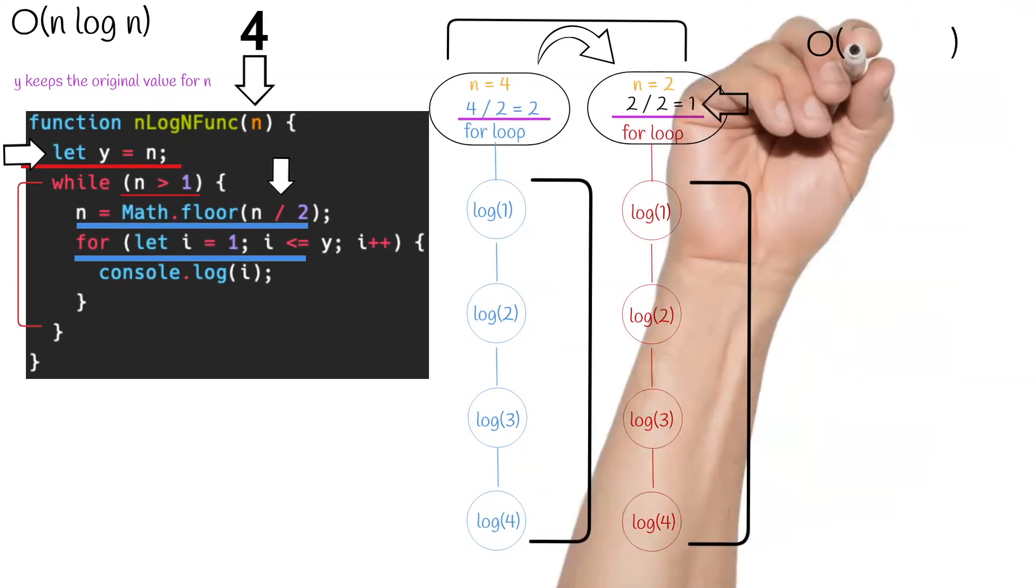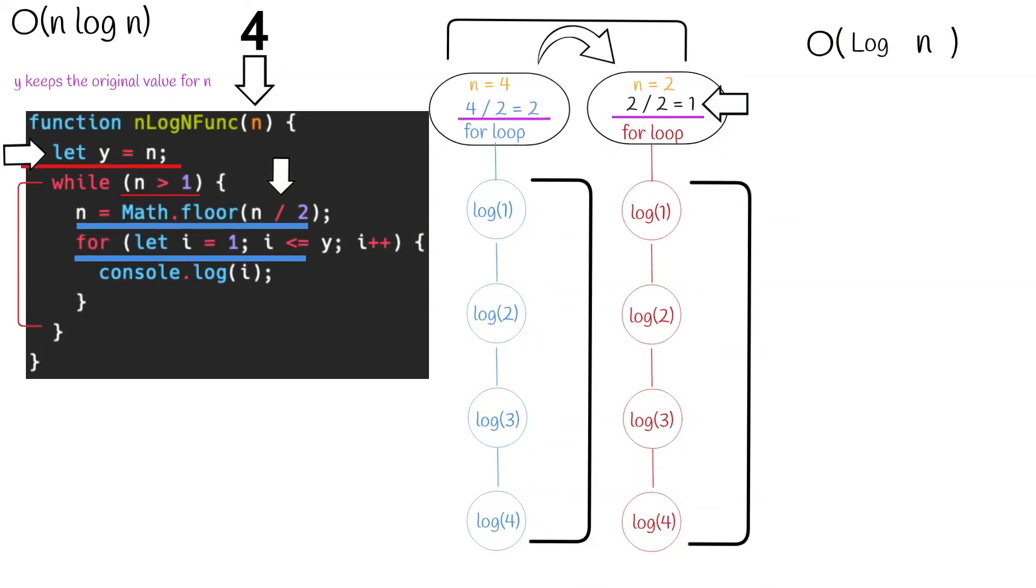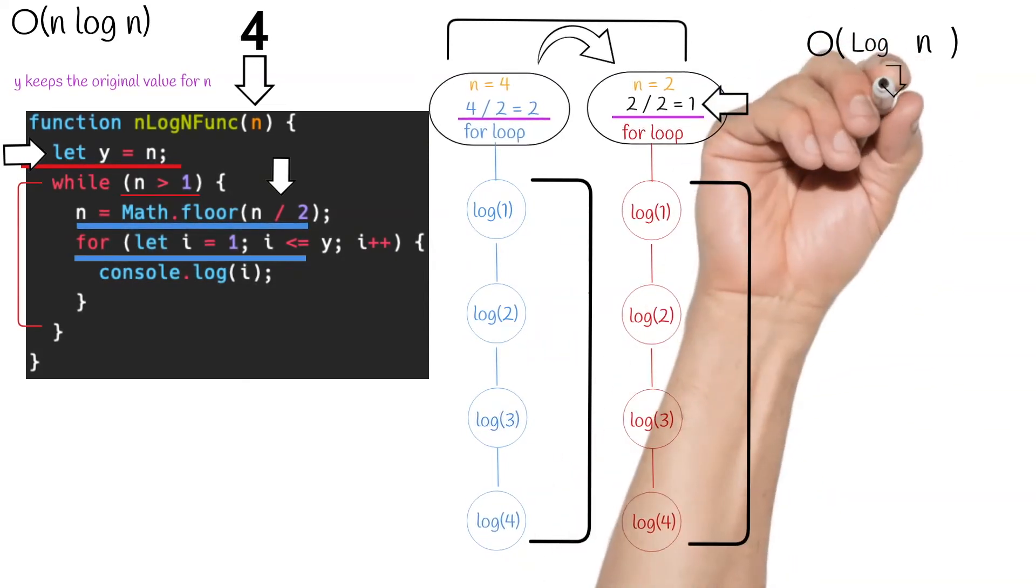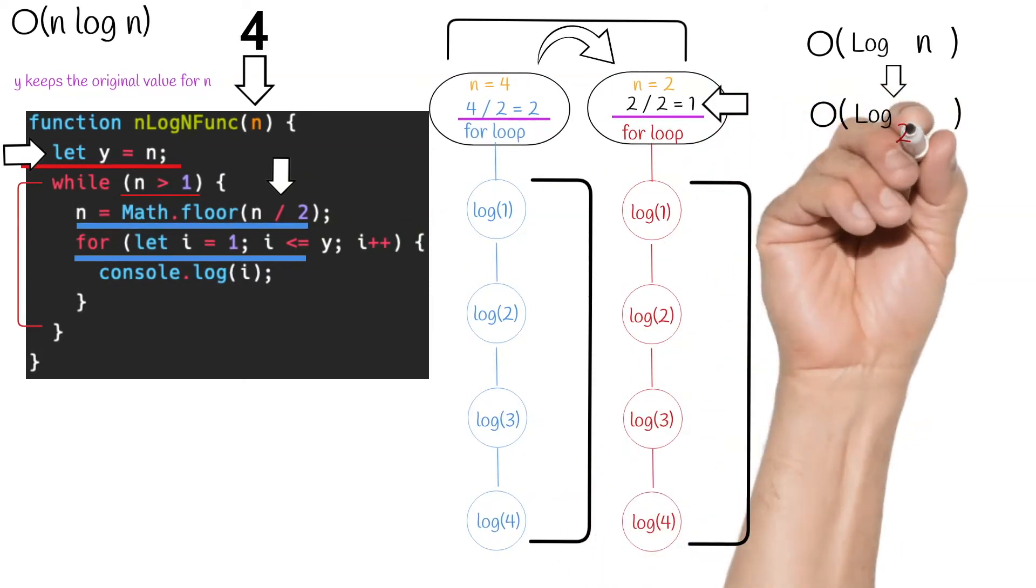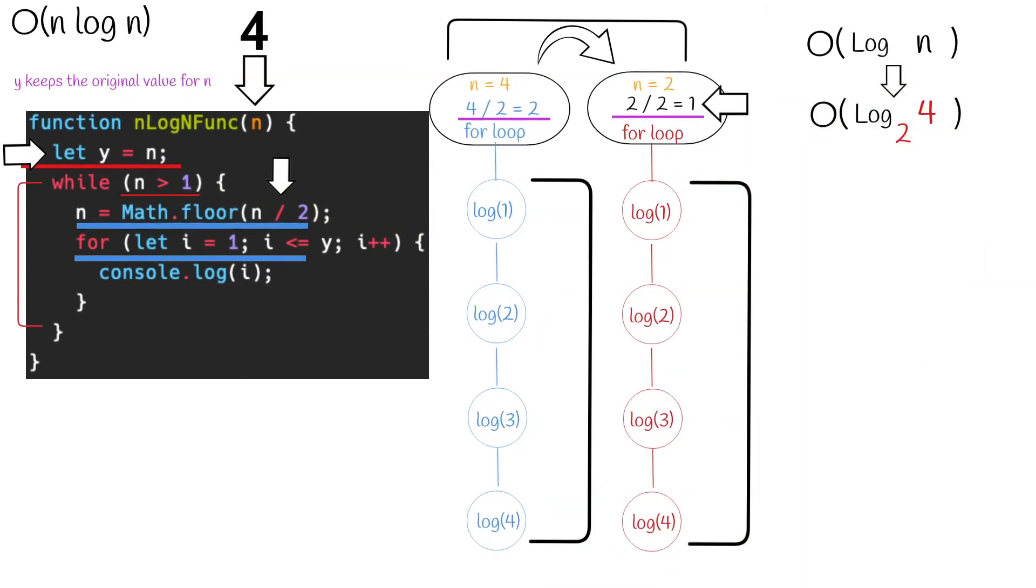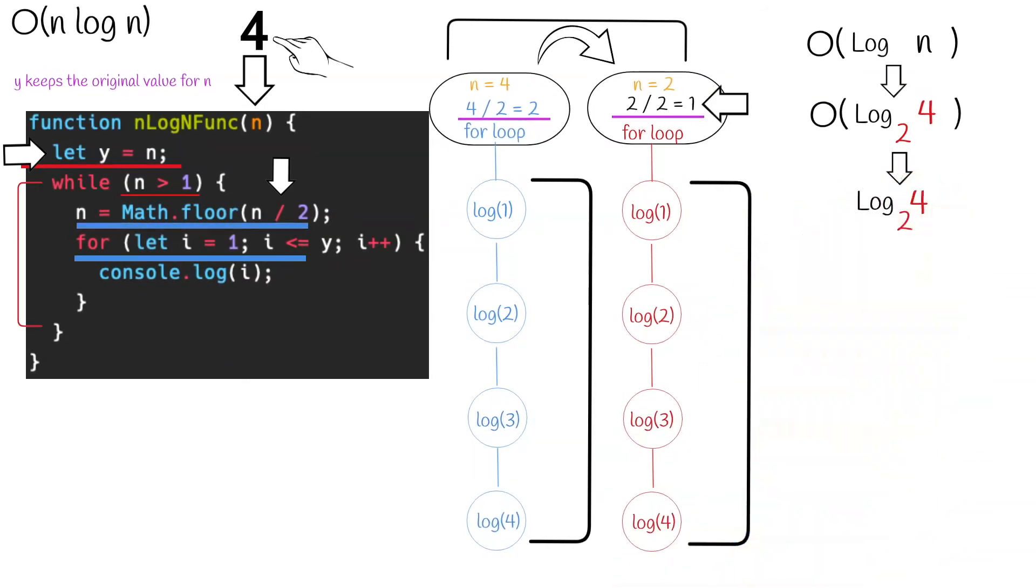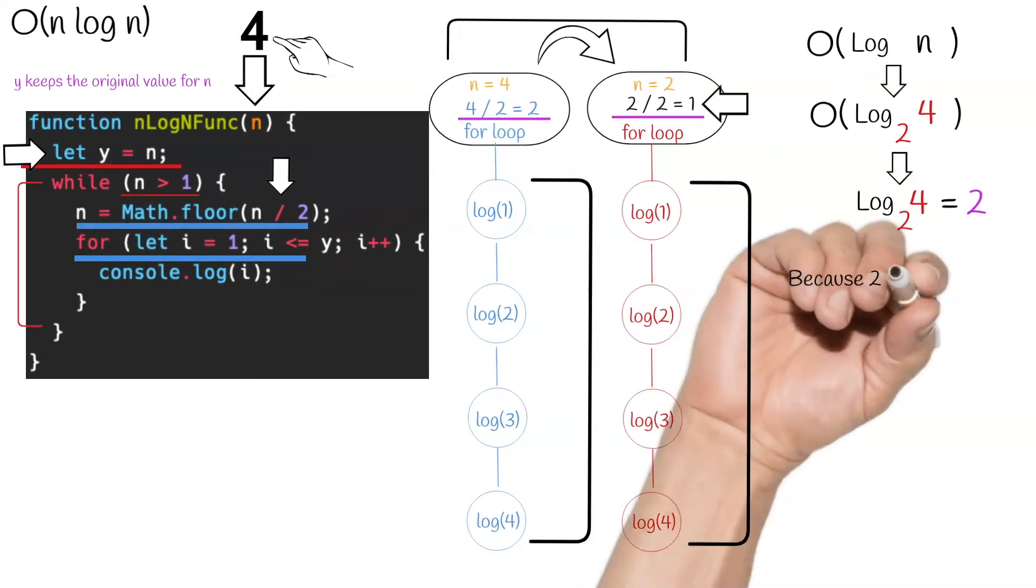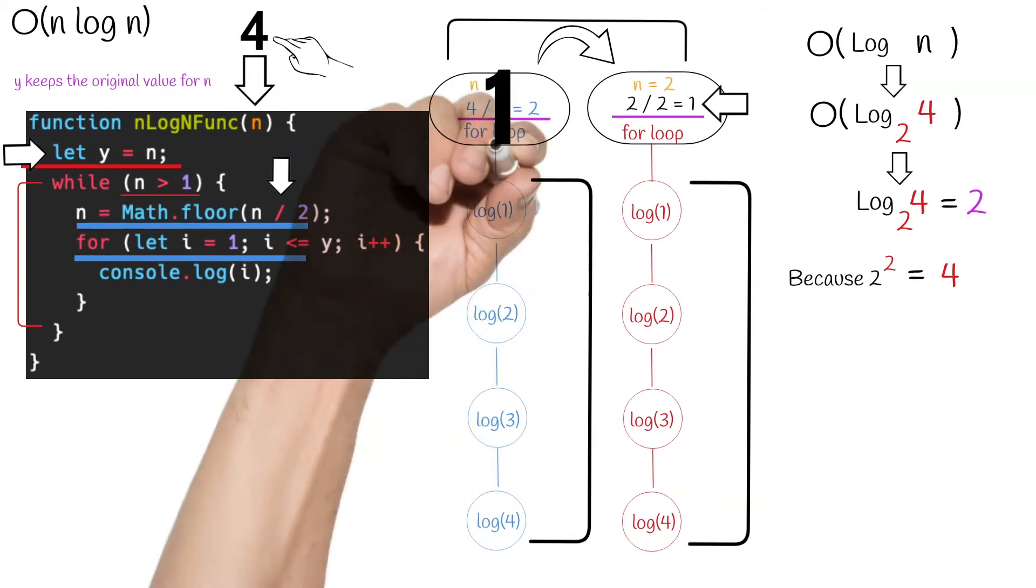So this is O log n. Let's plug in some numbers. Now if you've watched my video on O log n, you know that in computer science, the base of a logarithm is always two unless stated otherwise. So this can be rewritten as log base two of four, four because we are replacing n with our actual input for n which is four. And log base two of four is two because you need to raise two to the power of two to get four. And as you can see, this makes sense because for this top level loop, we only iterate two times.